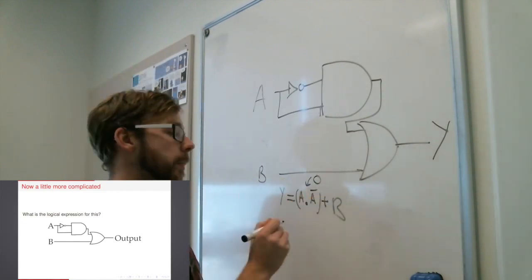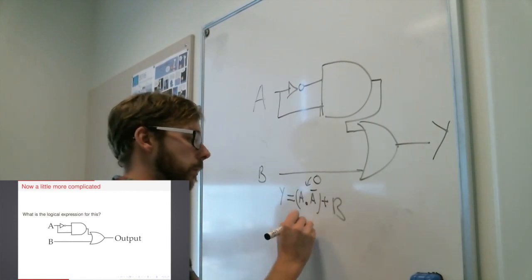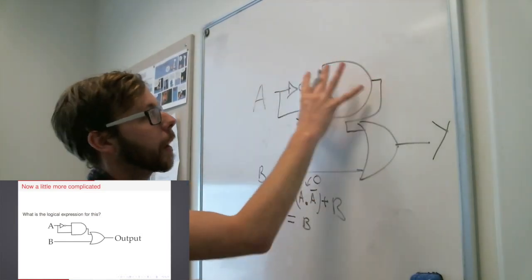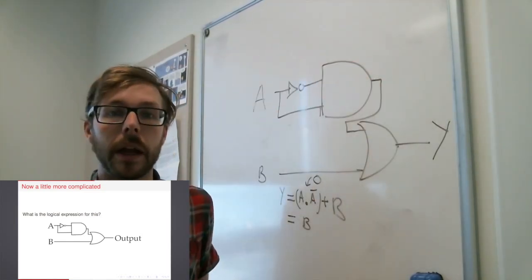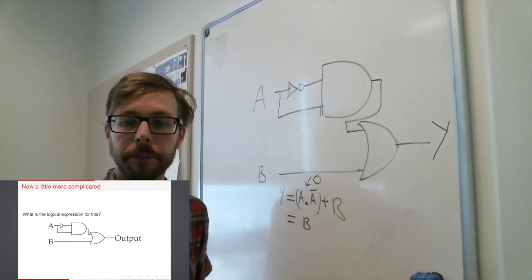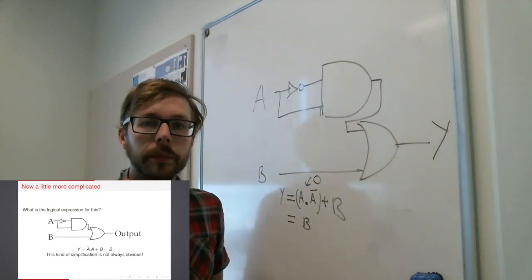They're mutually exclusive, which means I can simplify this expression to B. All I'm saying is that this whole part of my logic circuit here doesn't actually matter. The only input that can affect my output is my one at B.